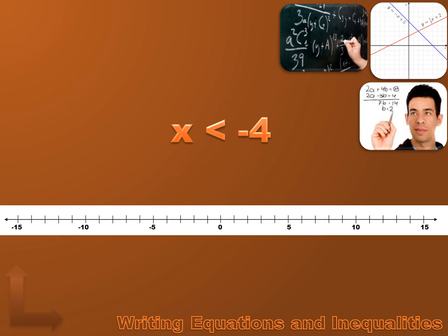How about x is less than minus 4? The graph is similar: we put an open circle over minus 4, because minus 4 is not less than minus 4. Then we draw an arrow to the left, indicating that every number to the left of minus 4 is a solution to x is less than minus 4.